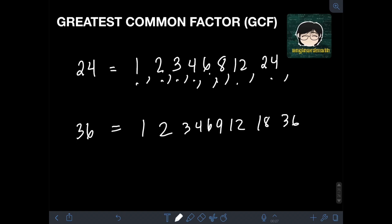So therefore, the factors of 36 are 1, 2, 3, 4, 6, 9, 12, 18, and 36.